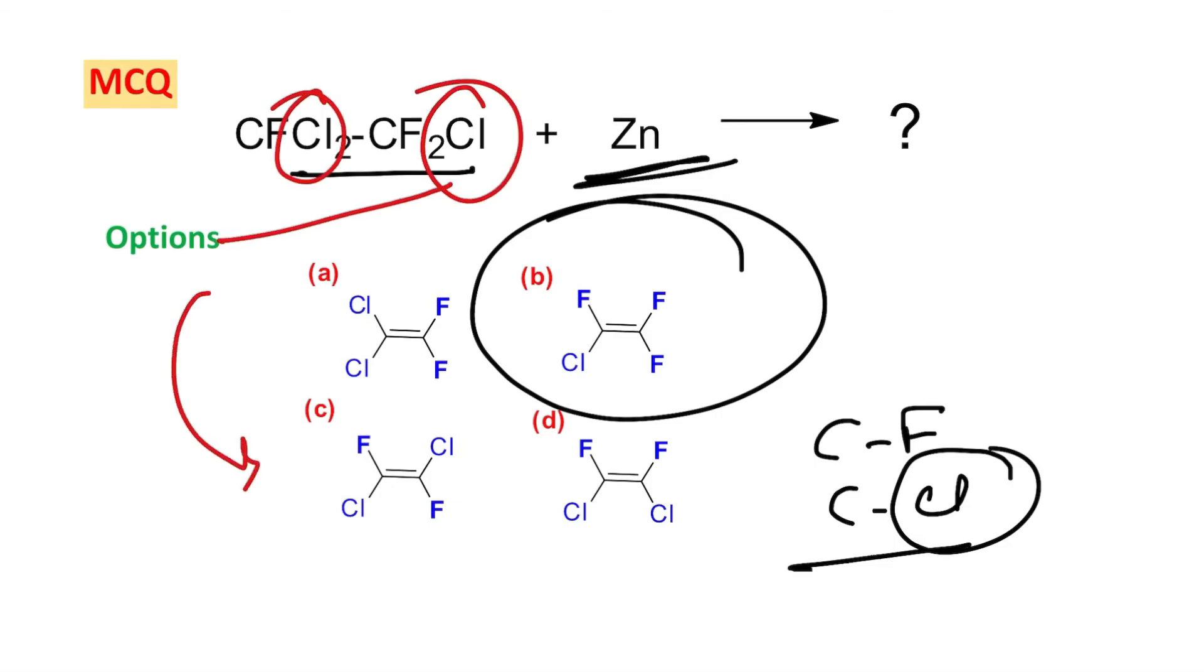So one side one Cl will remain, another side no Cl will remain. So this is the answer. I believe it is an easy question but let us take it.